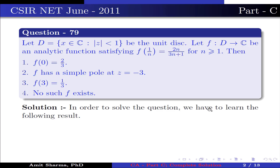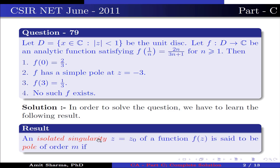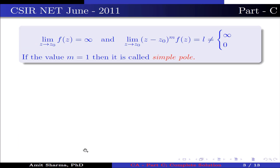In order to solve the question, we have to learn the following result. An isolated singularity z = z₀ of a function f(z) is said to be a pole of order m if limit z→z₀ f(z) = ∞, and limit z→z₀ (z - z₀)^m · f(z) = L, where L is neither equal to infinity nor equal to 0. If m = 1, it is called a simple pole.